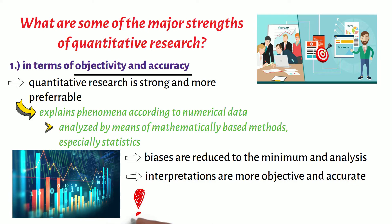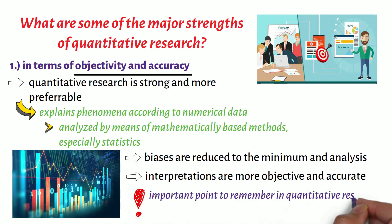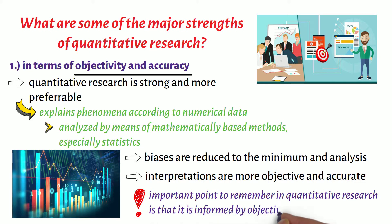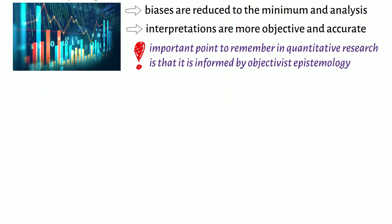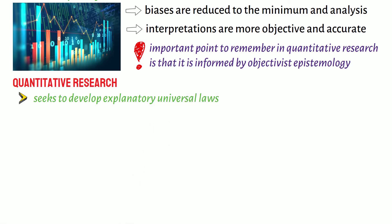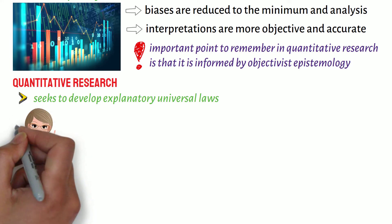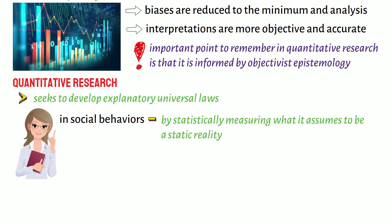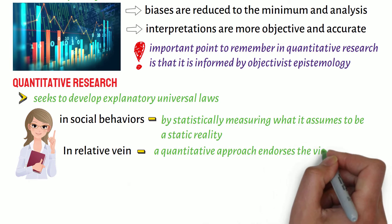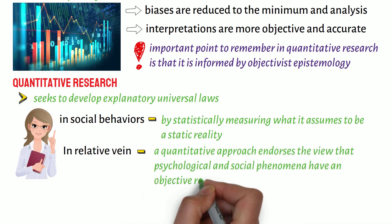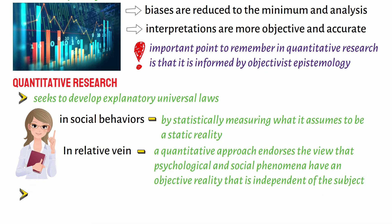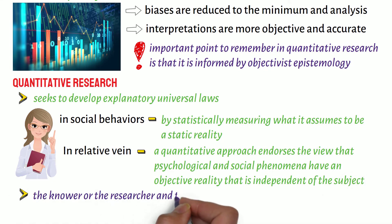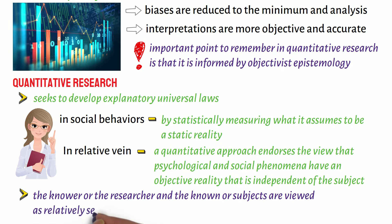In fact, another important point to remember in quantitative research is that it is informed by objectivist epistemology. This means that quantitative research seeks to develop explanatory universal laws, for example in social behaviours, by statistically measuring what it assumes to be a static reality. In a related vein, a quantitative approach endorses the view that psychological and social phenomena have an objective reality that is independent of the subject, that is, the knower or the researcher, and the known or subjects are viewed as relatively separate and independent.